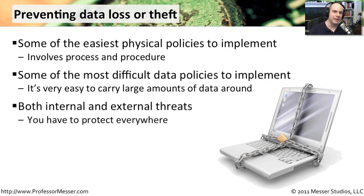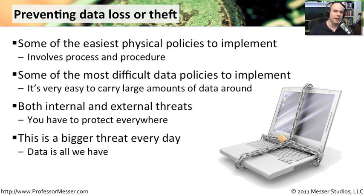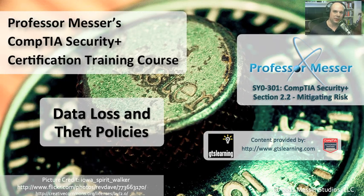There are threats internally and there are threats externally. We can't just look at one of those — we need to look at both and make sure that our policies are set up not just for people that we don't know, but also people inside of our environment. Unfortunately, it's very often the people that we trust inside of our environment that are creating problems with loss of data and loss of property. This is a bigger and bigger threat every day. We're putting more and more data on our networks, and we need to make sure that we have all of the right policies ready to go should any of these types of data loss or physical loss ever occur.